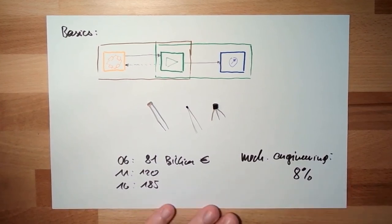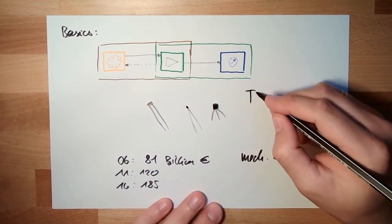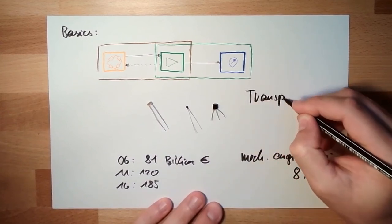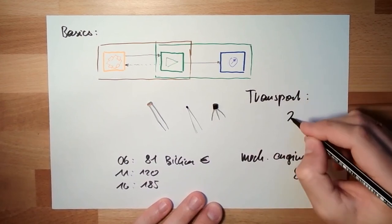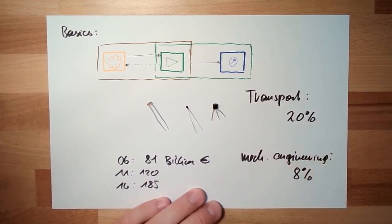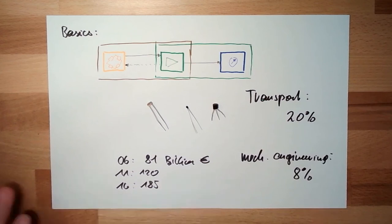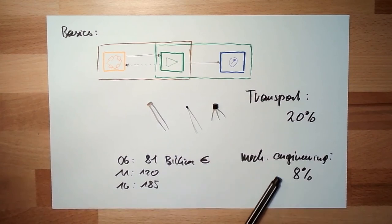Just in mechanical engineering, without transportation. Transportation, around 20%. 20% of all used sensors are in the field of transportation. 20% in IT. Like I say, in mechanical engineering, we are around 8%.